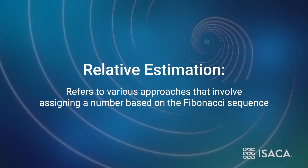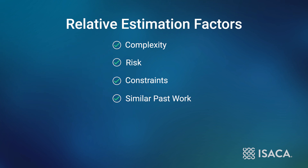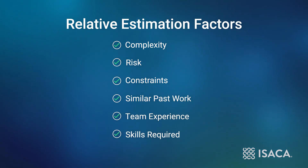Another example of how CMMI and Agile are complementary is estimation. These teams use relative estimation to determine the magnitude of effort required for the work they must accomplish. Relative estimation refers to various approaches that involve assigning a number based on the Fibonacci sequence, or assigning a designation like small, medium, or large to items in a team's backlog. Items in the backlog are sized relative to one another. As part of this process, a team may consider various factors such as complexity, risk, constraints, whether similar work has been performed in the past, the team's experience, and skills required to complete the work.